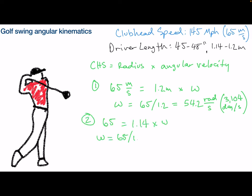In our second scenario, 65 meters per second clubhead speed with a 1.14-meter driver, or 45 inches, results in an angular velocity of 57 radians per second, or 3,267 degrees per second. This is a more aggressive swing.